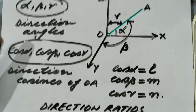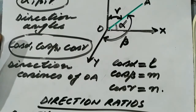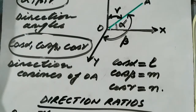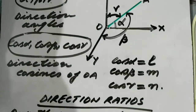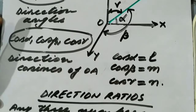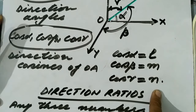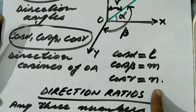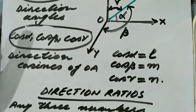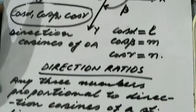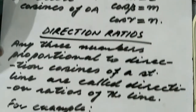Generally, these direction cosines are denoted by small l, m, n respectively. So cos alpha equals l, cos beta equals m, and cos gamma equals n.